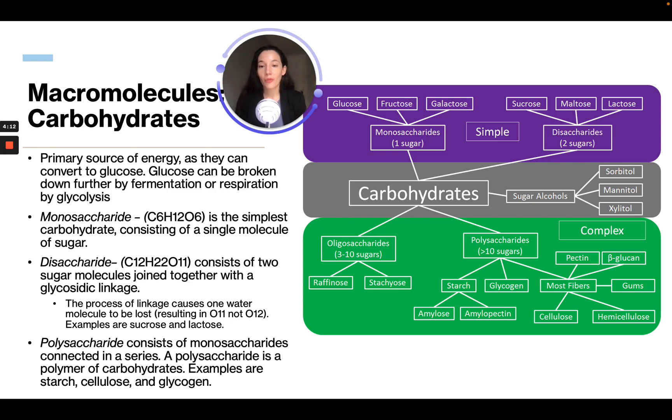Examples are sucrose and lactulose. Polysaccharides consist of monosaccharides connected in a series. A polysaccharide is a polymer of carbohydrates. Examples are starch, cellulose, and glycogen. These are all different types of carbohydrates.